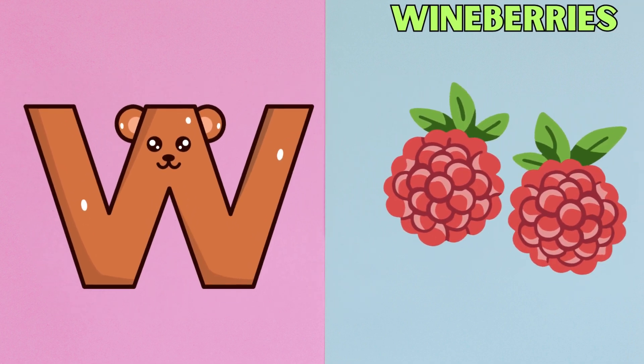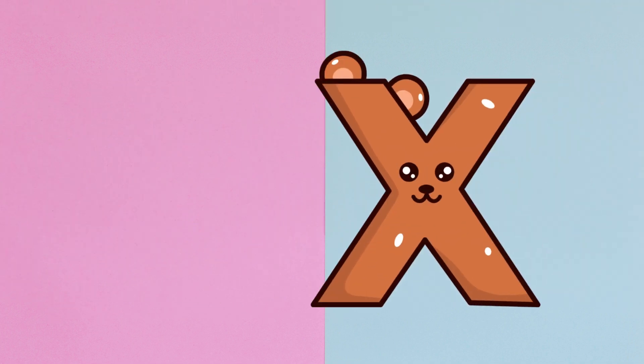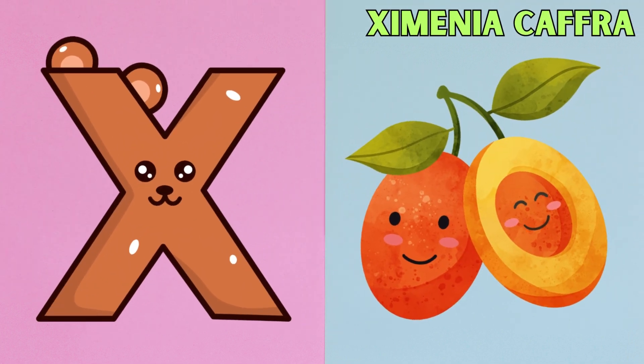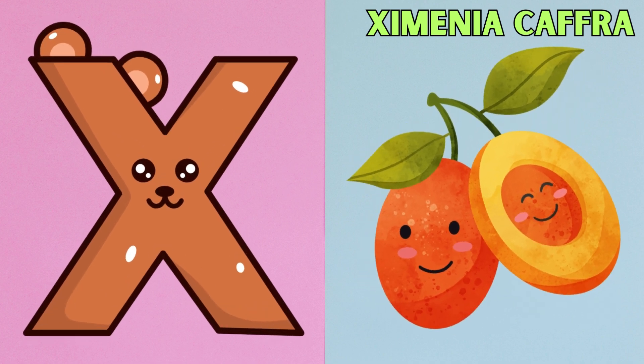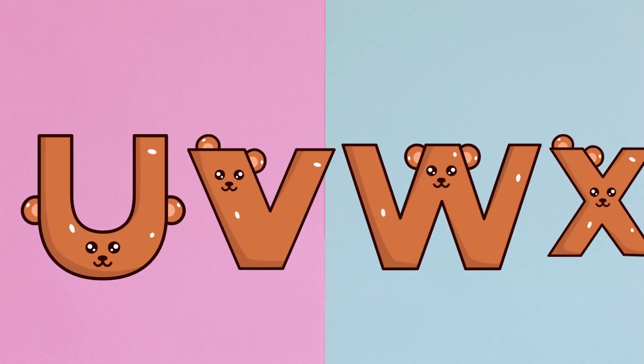W is for Wine Berries. W, W, Wine Berries. X is for Samania Khafra. X, X, Samania Khafra.